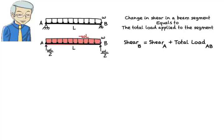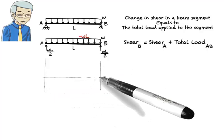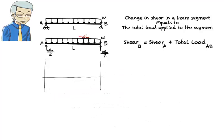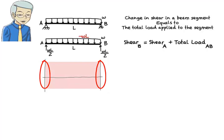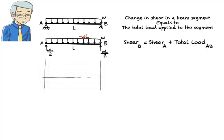The negative sign indicates that the load is acting downward. To draw the shear diagram for the beam segment, we need three pieces of information: one, shear at the left end of the segment; two, shear at the right end of the segment; and three, the shape of the curve that connects the two points. In the case of a simply supported beam, shear at the left end of the beam always equals to the support reaction at that end.